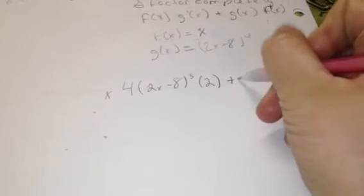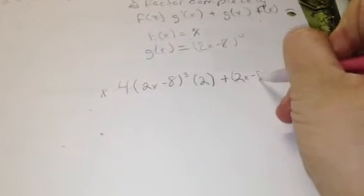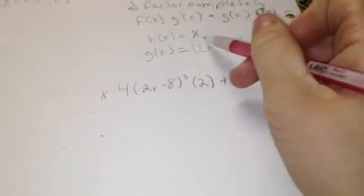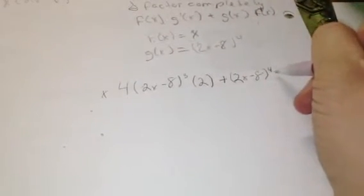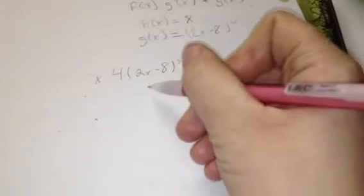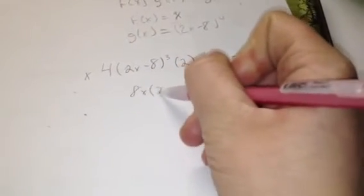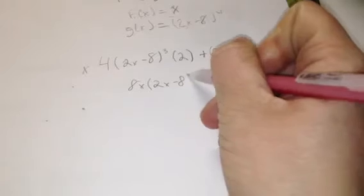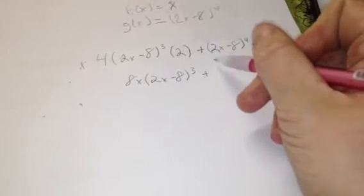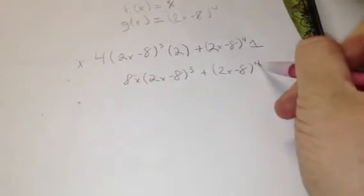Then you add g of x — that's 2x minus 8 raised to the fourth power — times the derivative of f of x, which is 1. Multiplying those out gives you 8x times 2x minus 8 raised to the third power, plus 2x minus 8 raised to the fourth power.